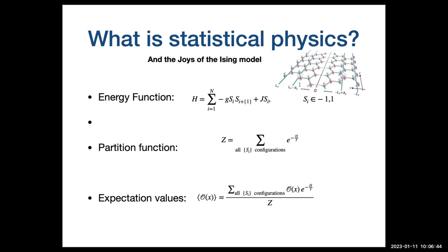In physics, you have an energy function. You have some configuration of the spins up and down, and that has some energy. In statistical physics, you talk about a partition function, which is basically a weighted sum of all the possible configurations of spins. These are weighted by the temperature - a parameter that tells you how much weight the higher energy configurations have. It's a theory of ground state: the lowest energy configuration plus fluctuations of higher energy around it.